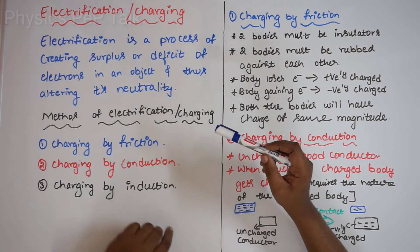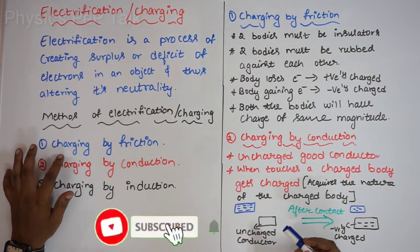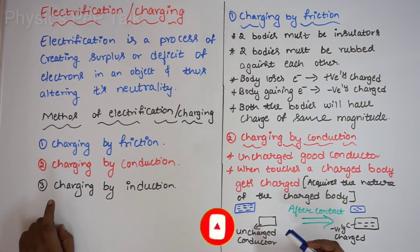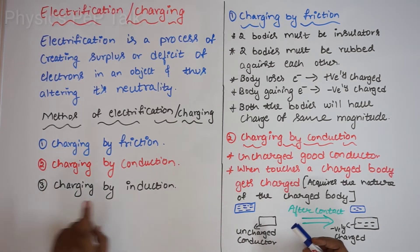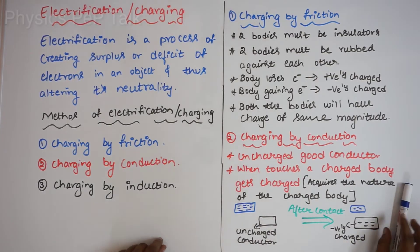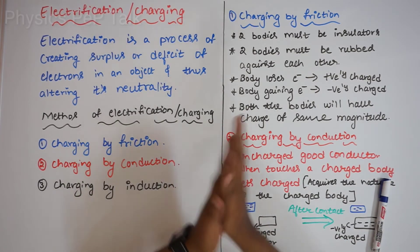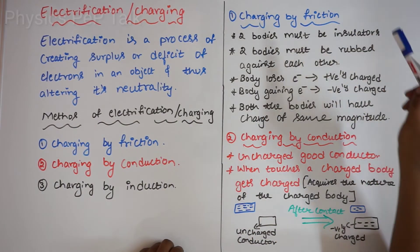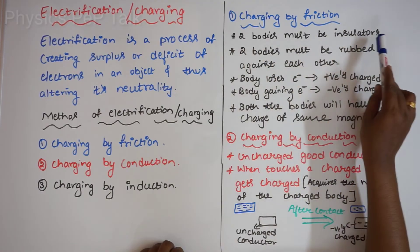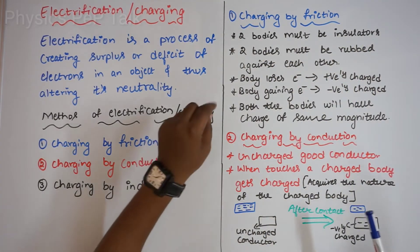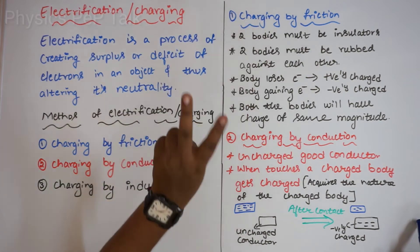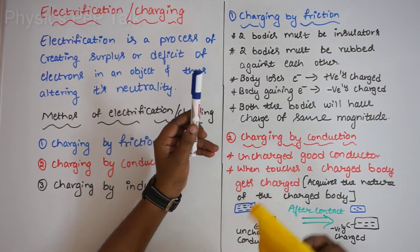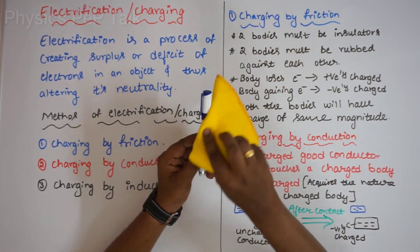There are three methods for charging. The first method is charging by friction. Charging by friction is when we rub two surfaces against each other. To obtain this type of charging, two bodies must be insulators. The best example is a glass rod and silk cloth rubbed against each other.